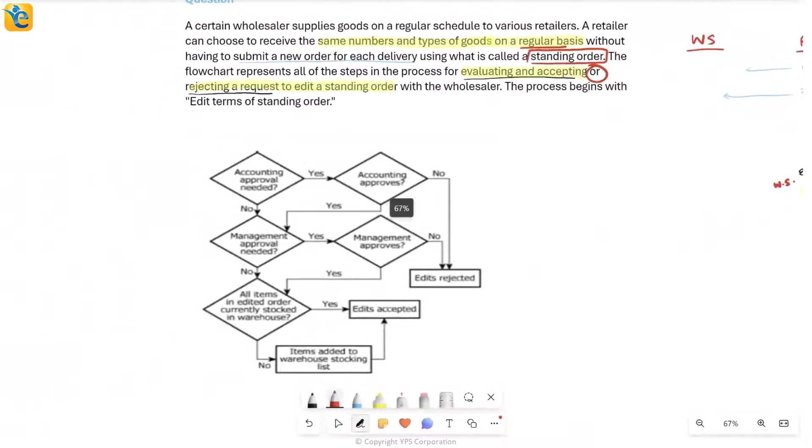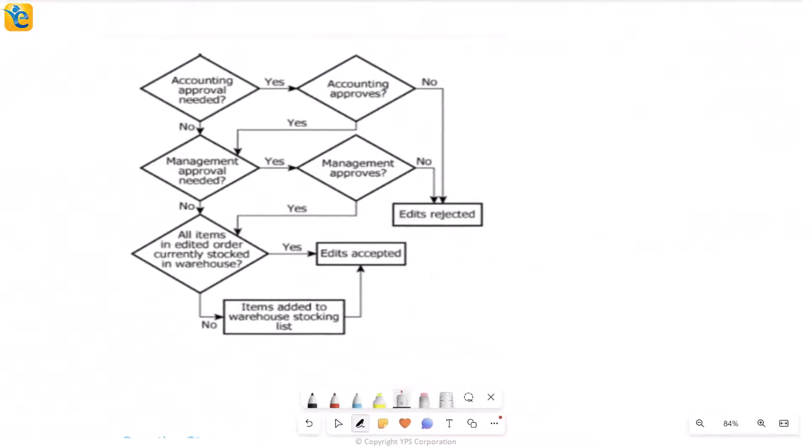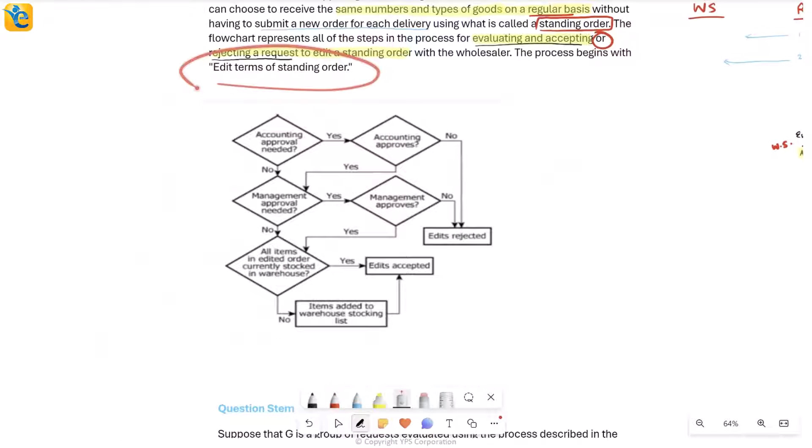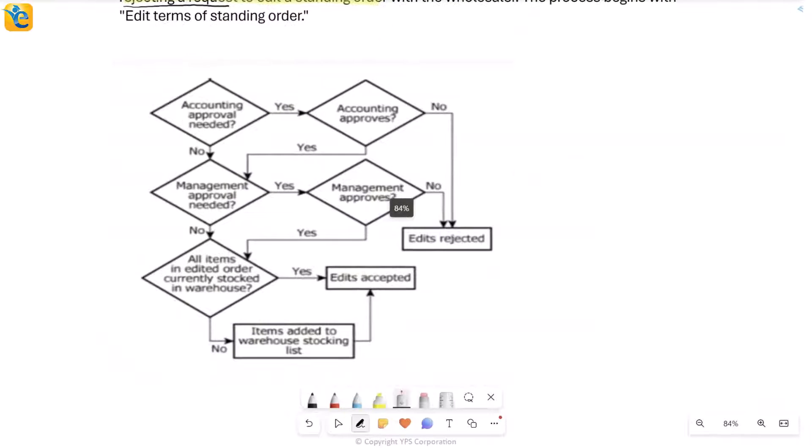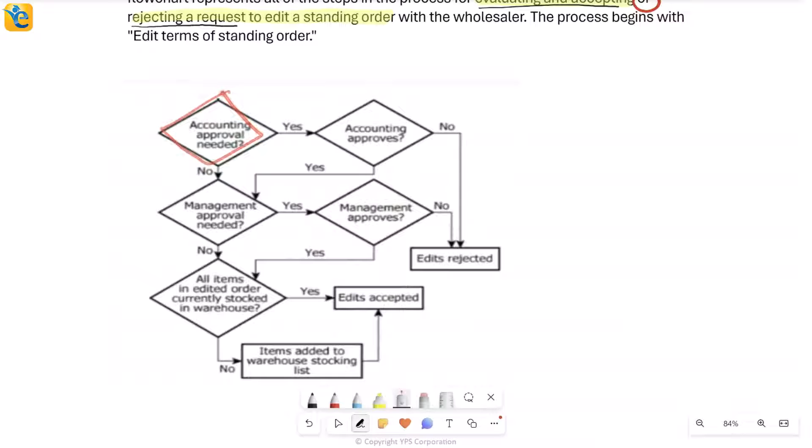Let's quickly look at the flowchart. This starts with editing the terms of a standing order. First, is accounting approval needed? If it is needed, does accounting approve it? If not, the edit is already rejected. But there's also a situation where accounting approval is not needed, shown by no. Then you go to the next stage. Is management approval needed? Again, if it is needed and it's not approved, it gets rejected. If it's not even needed, you proceed to the next level. Similarly, if accounting approval is given, you check if management approval is needed or not.